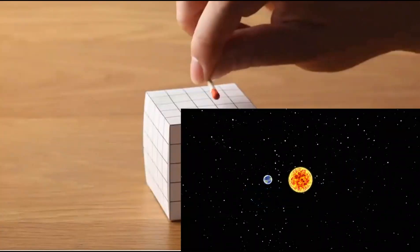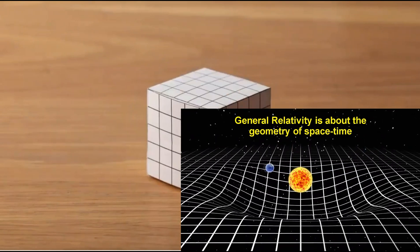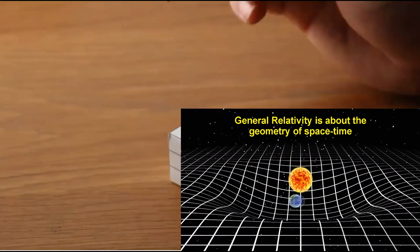What you have to understand is that general relativity at its core is about the geometry of space-time. Einstein showed that gravity is a geometric warping of space-time.